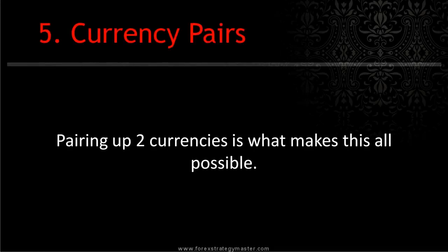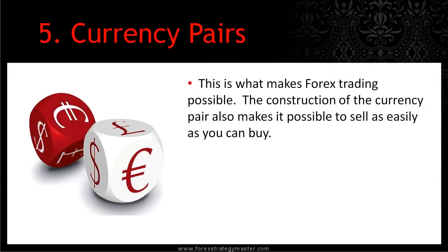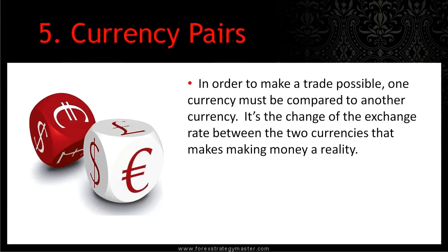Currency pairs. Pairing up two currencies together is what makes forex trading possible. The construction of the currency pair also makes it possible to sell as easily as you can buy. In order to make a trade possible, one currency must be compared to another currency. It's the change of the exchange rate between the two currencies that makes money a reality. When you are looking at one currency, if the exchange rate changes and you view that currency on its own, there is no real change in buying power. A dollar is still worth a dollar. It's not until you compare that currency's strength or weakness to another currency that you're going to see a difference.